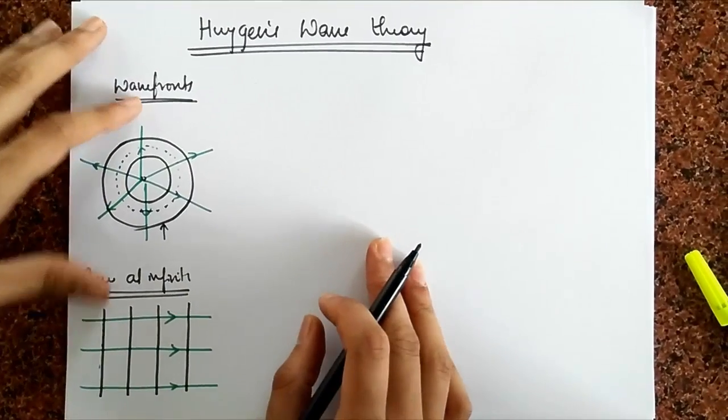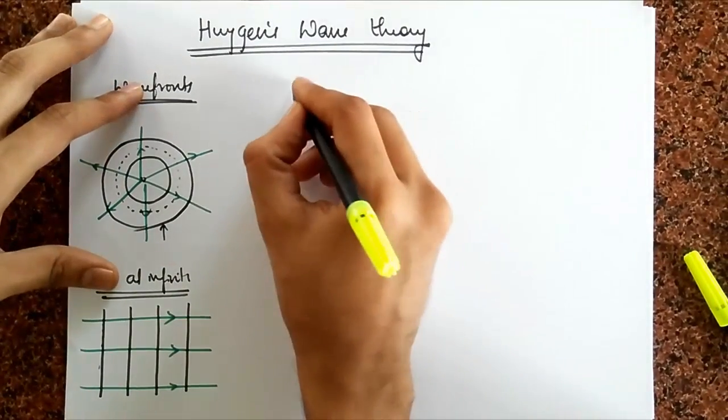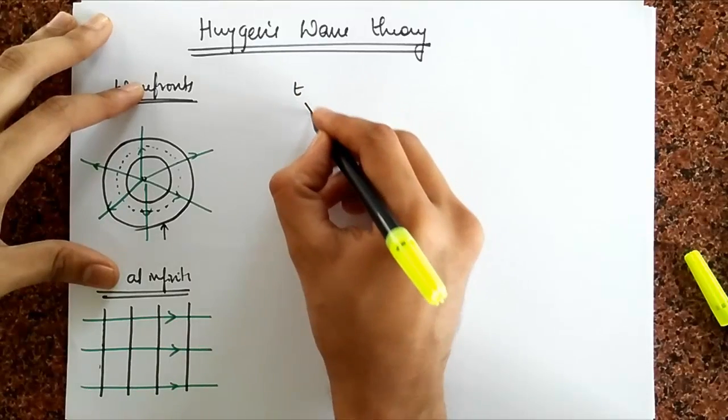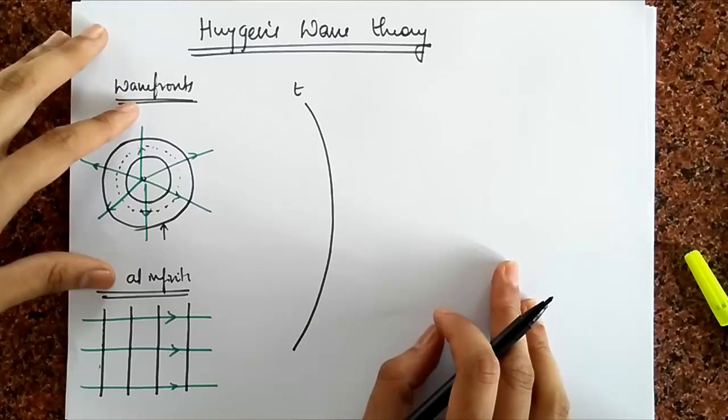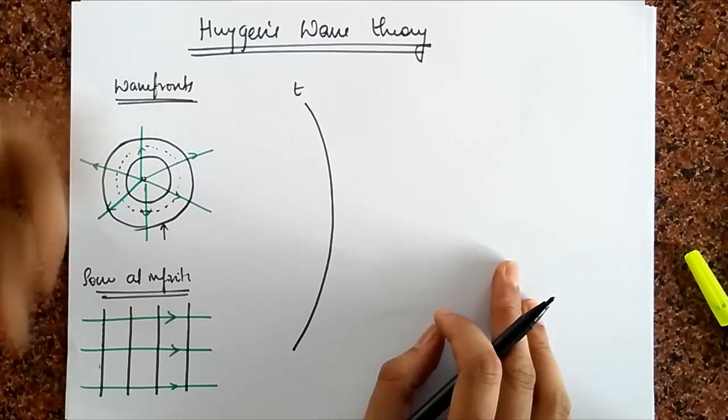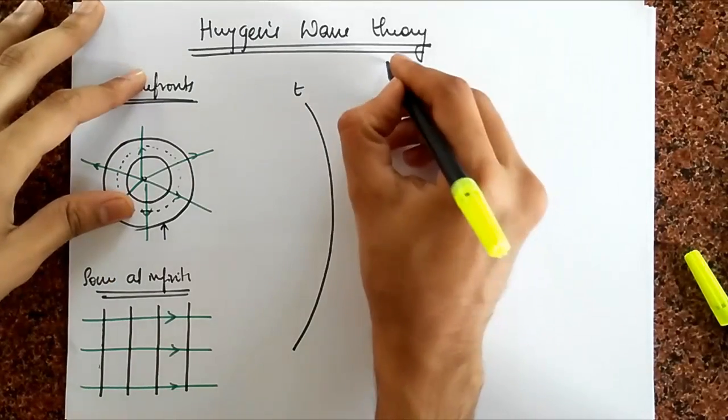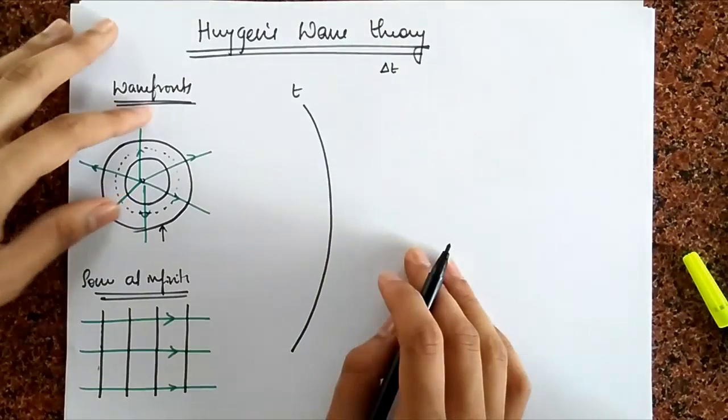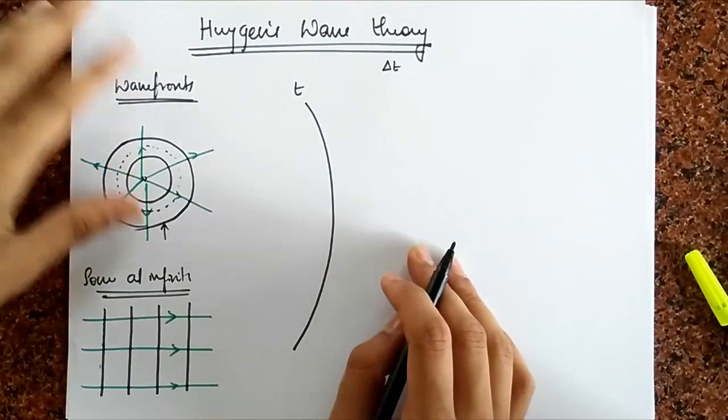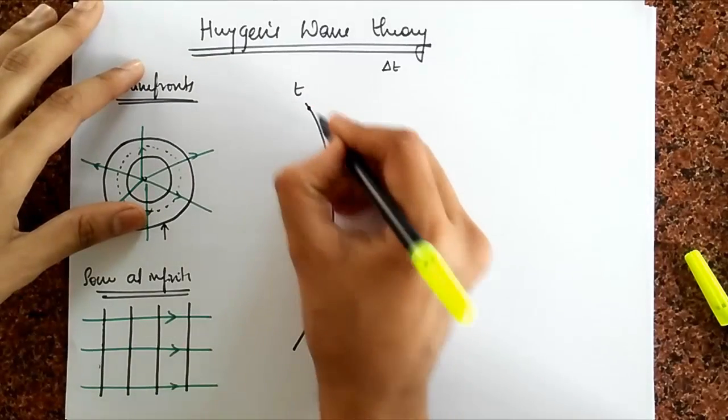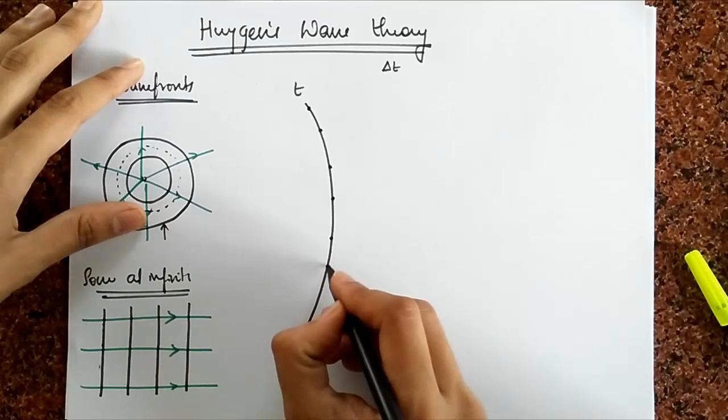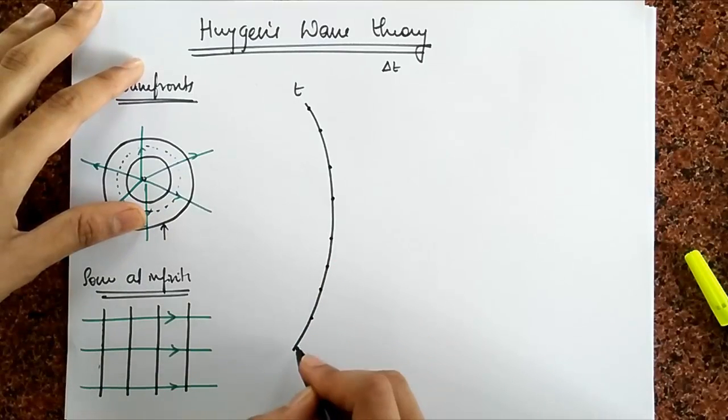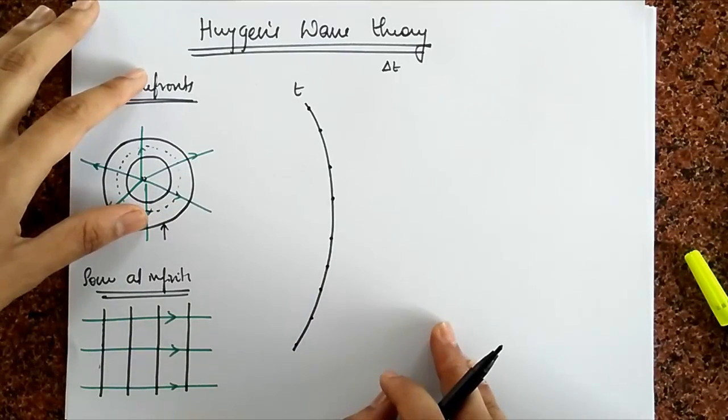So his idea is the following. Suppose at time t, I have some wave front like so, and I want to know a little time delta t later, what's going to be the shape of the new wave front. Huygens says, consider every point on this current wave front as a Huygens source for secondary waves. Meaning, each point on this wave front acts like a source, giving out spherical waves.